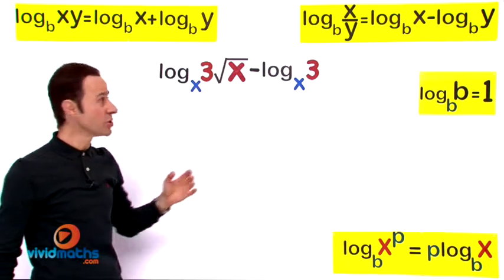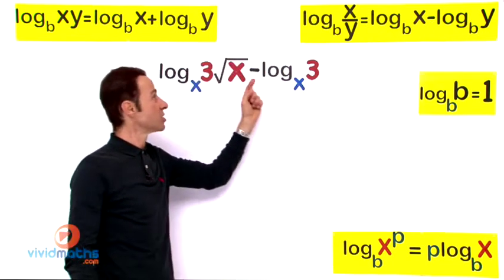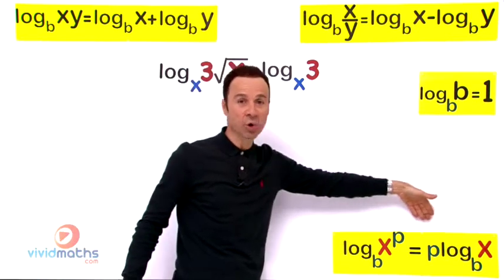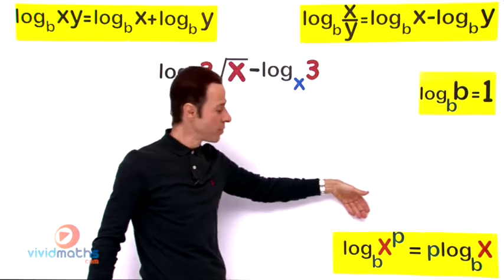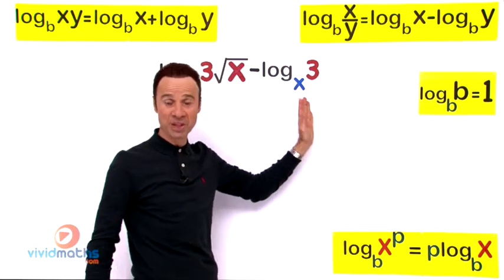The first log law we will be using will be this one right over here, because we have a subtraction sign right there which matches perfectly right over there. And we are also going to use this log law down below. This is where we move the power of the exponent out to the front in order to simplify this logarithmic expression.